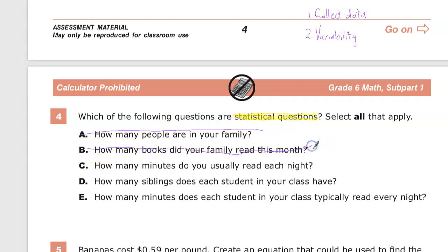C, how many minutes do you usually read each night? Again, it's a single answer. You say, I usually read 20 minutes. Now to get to that point, you might have to do some data collection, but the question itself doesn't ask you to do it. It just says, how many minutes do you read every night? 20 minutes or whatever it is. It falls in there and it's just a single number. So that's out.